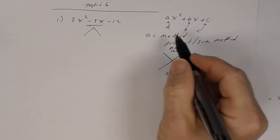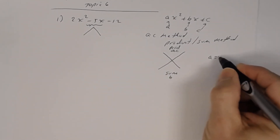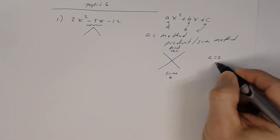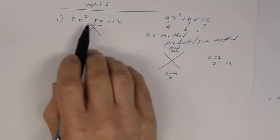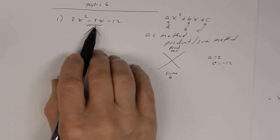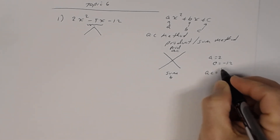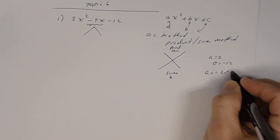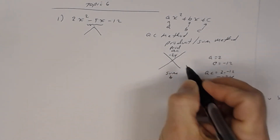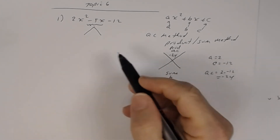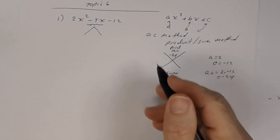In this case, a is 2 and c is negative 12. Wait — let me clarify: looking at 2x squared minus 5x minus 3, a is 2, c is negative 3... Actually, AC is 2 times negative 12. So a times c is negative 24. I want the sum to be b, which is the coefficient of x, so the sum is negative 5.